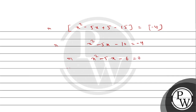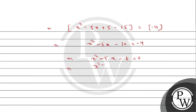This implies x²-5x minus 6 equals 0. We factorize: x²-6x+x-6 equals 0.